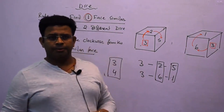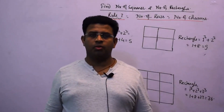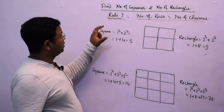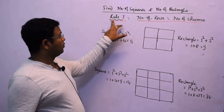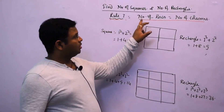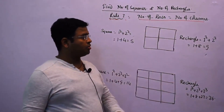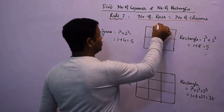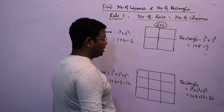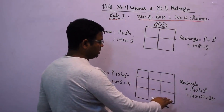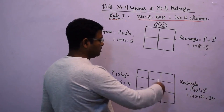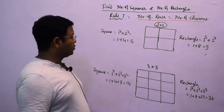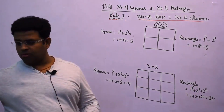Now we'll find the number of rectangles and number of squares. The rule is: when the number of rows and number of columns are equal — for example, two rows and two columns, or three rows and three columns — we apply specific formulas.